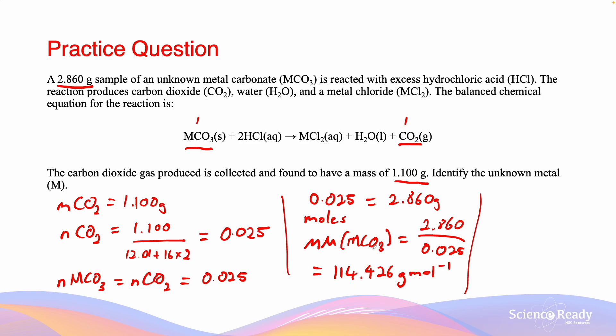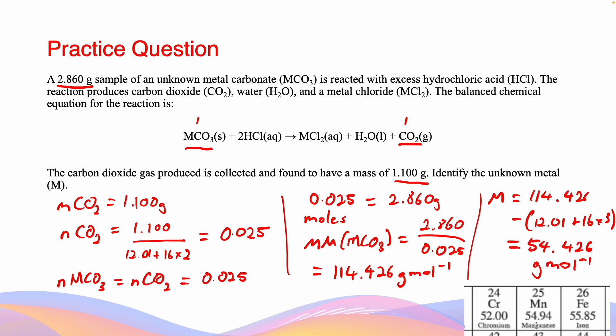Now that we have the molar mass of the whole molecule, we can work out the molar mass of M by subtracting the molar mass of the carbonate ion. The molar mass of M equals 114.426 minus 12.01 plus 16 times 3, giving us 54.426 grams per mole. According to the data sheet, the metal manganese has the closest molar mass to 54.426, and therefore the unknown metal M is manganese.